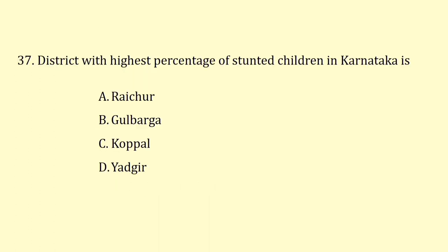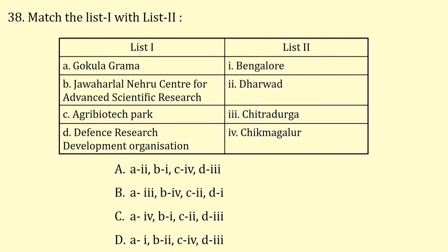The district with the highest percentage of stunted children in Karnataka is Raichur. Match list 1 with list 2: Gokulagrama is in Chikmagalur, Jawaharlal Nehru Centre for Advanced Scientific Research is in Bangalore, Agribiotech Park is in Dharwad, and DRDO is in Chitradurga. So the correct answer is option C.